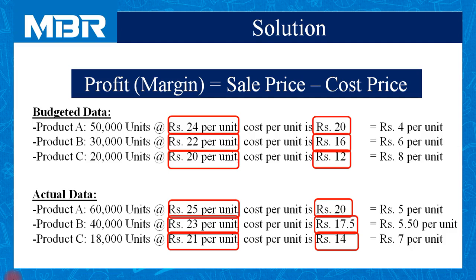The amount of actual profit for product A is Rs. 5. For product B, cost price is Rs. 17.5 while sale price is Rs. 23, so 23 minus 17.5 equals Rs. 5.5. And for product C, sale price is Rs. 21 and cost price is Rs. 14, so profit per unit in case of product C is Rs. 7 per unit.